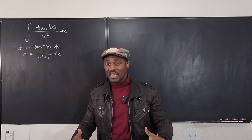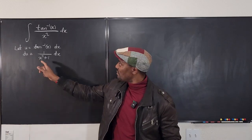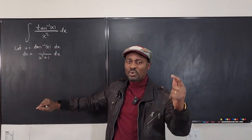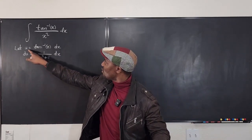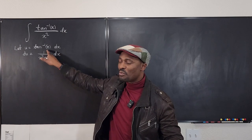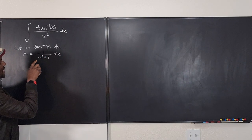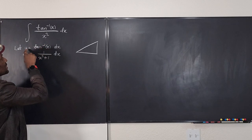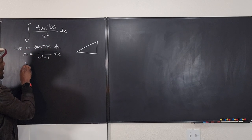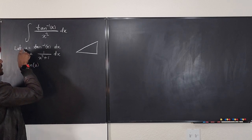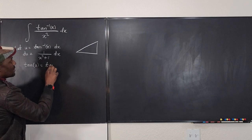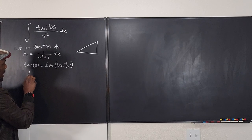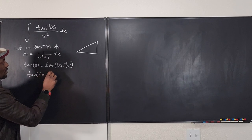Usually when we do a u-substitution, we want to get rid of x completely, but our derivative still has x² + 1. We need to deal with that. Remember our original substitution: u = arctan(x). Let's play with this using a triangle. If arctan(x) = u, then taking tan of both sides gives us tan(u) = x.